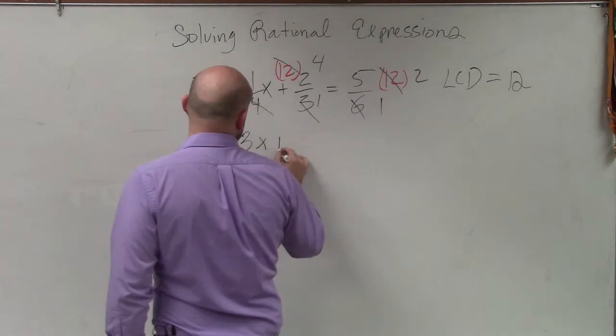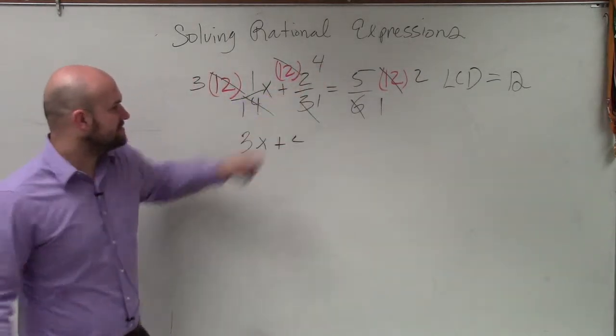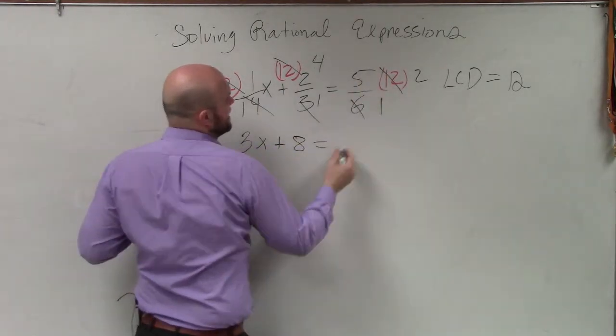I have 3x plus 4, and then times 2 is going to be 8, equals 5 times 2, which is 10.